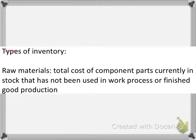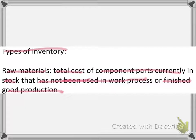There are three types of inventory. First is raw materials. Raw materials is basically the total cost of the component parts currently in stock. These component parts have not been used in work in progress, neither in finished goods production — they are the current stock.